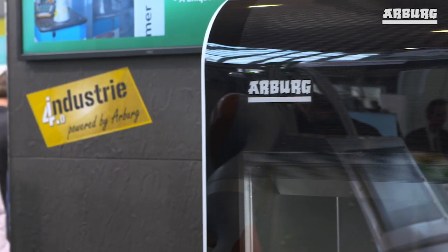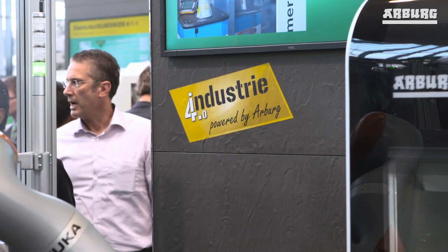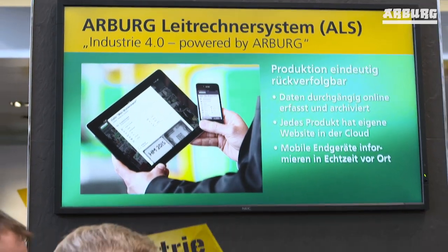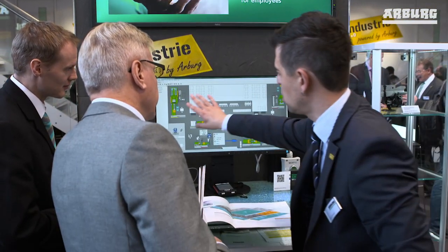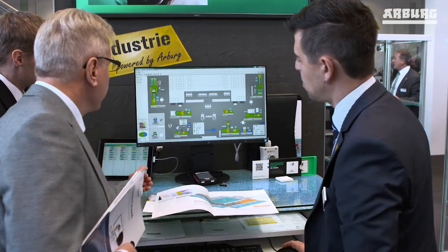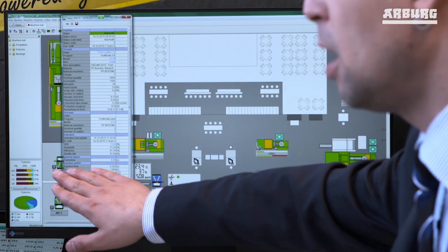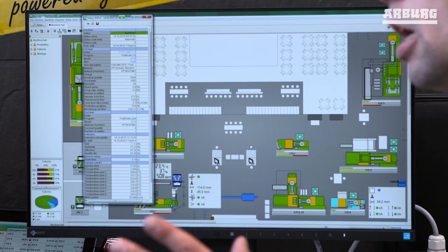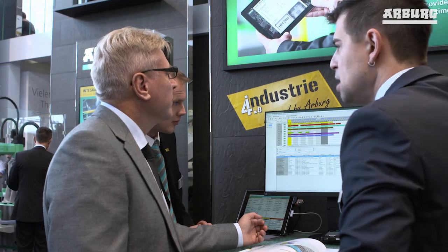Another important building block toward achieving Industry 4.0 is centralized information management and the exchange of information between the individual components in the production cell. Our Arburg host computer system plays a central role here, connecting the injection molding machine, the freeformer, and the automation components via the standardized OPC UA interface.